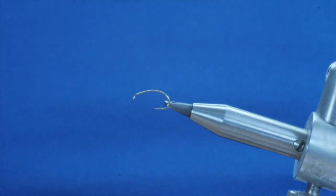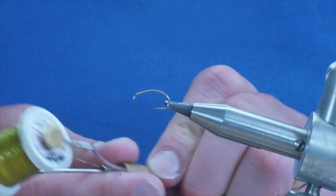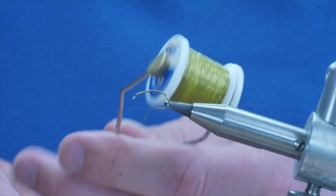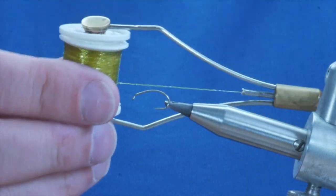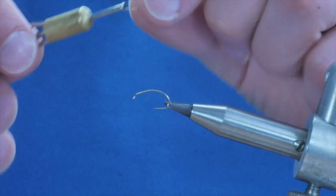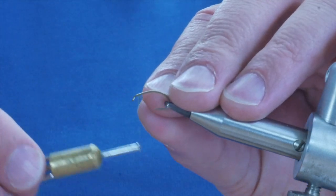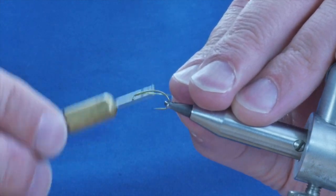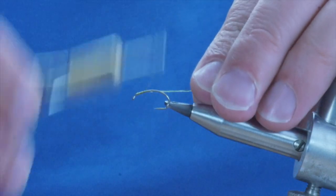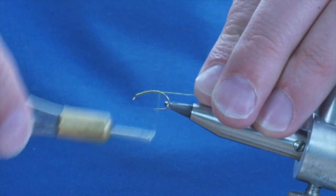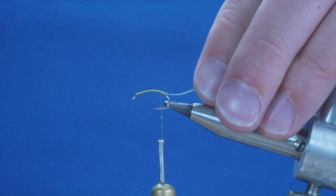The first thing I'm going to do is not use thread. I'm going to use some of this Hanak body quill material. And if you want the exact color, it is BQ35. It's a really nice olive that I'm going to just lash onto my hook. No wax, no glue, just get it on and bring it down towards the bend of the hook.